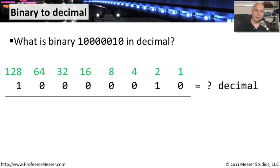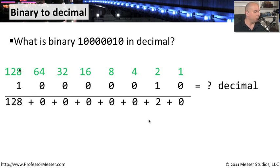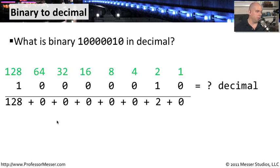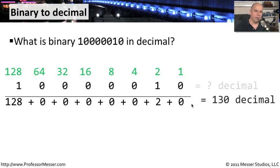Now all we need to do is determine where there is a 1. Every place there is a 1, we bring that number down. We know there's a 1 under 128, and all the rest are 0s except there is also a 1 under the number 2. So we've got 128 plus 2, which equals 130. That's how straightforward it is to take a binary number and convert it into the base-10 decimal number we're accustomed to seeing.